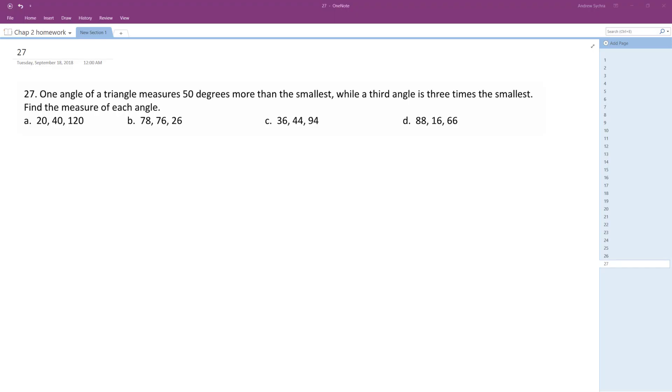One angle of a triangle measures 50 degrees more than the smallest. We can do X plus Y plus Z equals 180.